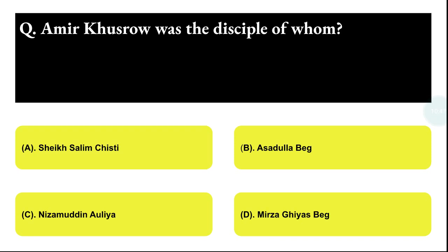Next question: Amir Khusrow was the disciple of whom? Option A: Sheikh Salim Chisti, Option B: Asadullah Beg, Option C: Nizamuddin Auliya, Option D: Mirza Kiya Beg. The correct answer is option C, that is Nizamuddin Auliya.